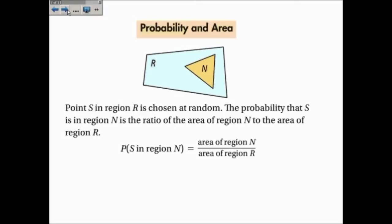Again, this reminds me of favorable outcomes out of possible outcomes. It's in region N out of the total region R.